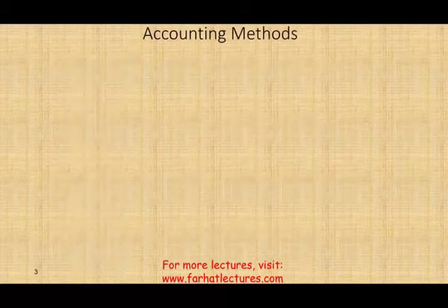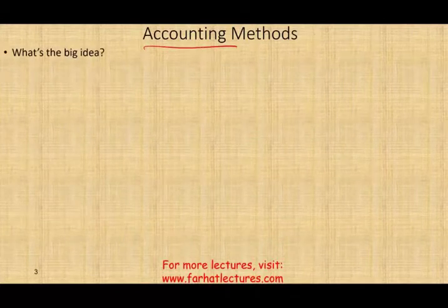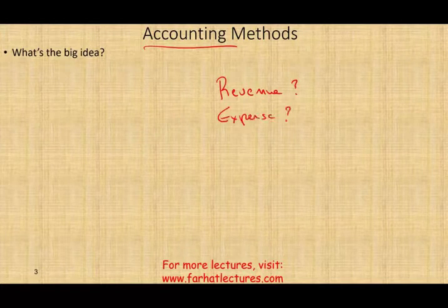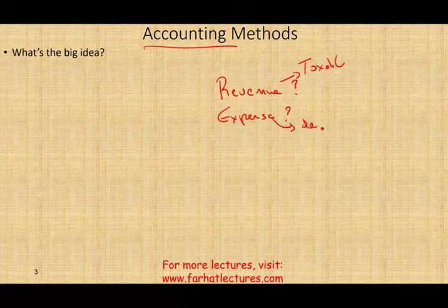Let's get started. We're talking about accounting methods today. The accounting method determines when to recognize revenue and when to recognize the expense or deduction for tax purposes. Simply put, once we determine the accounting method, it tells us when an amount is taxable and when it is deductible — and this is important for tax purposes.